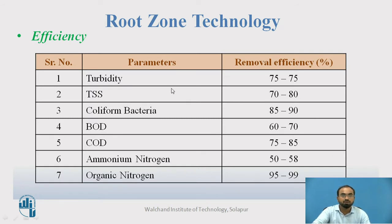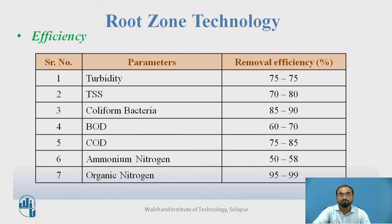The effluent water shows a turbidity removal efficiency of around 75 percent. TSS removal is around 70 to 80 percent. Coliform bacteria removal efficiency is around 85 to 90 percent. BOD removal efficiency is relatively lower, but if a multi-digestive system is used, it can increase. For pure root zone technology, BOD removal is around 60 to 70 percent.